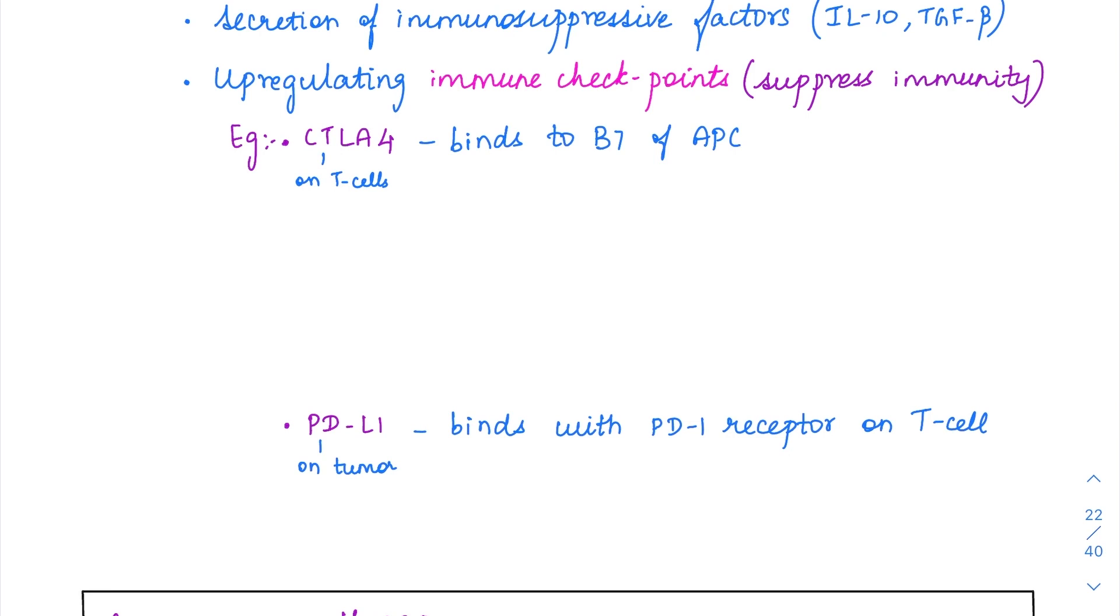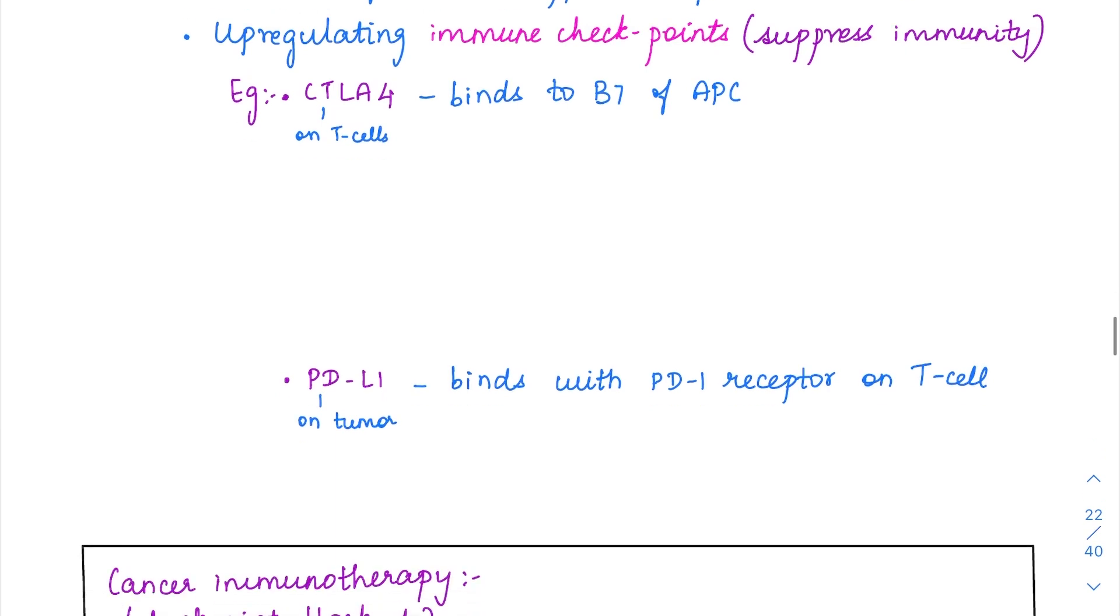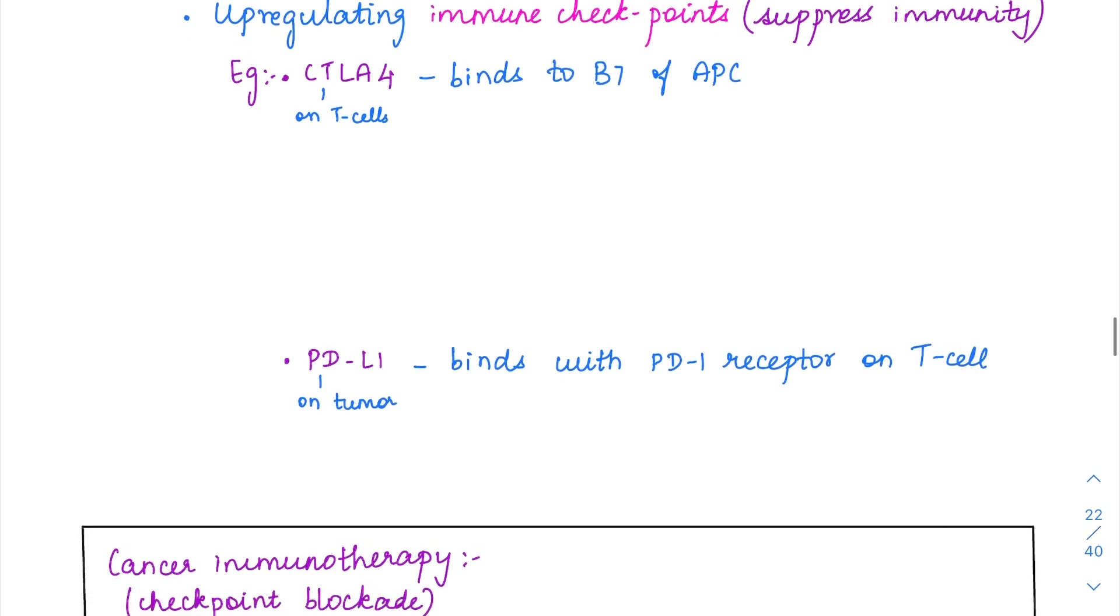And also, there is the most important thing which is upregulating of the immune checkpoints. These immune checkpoints actually suppress immunity. When we are discussing immunity I already mentioned there is something called as CTLA-4 and PD-1, PD-L1 in anergy.